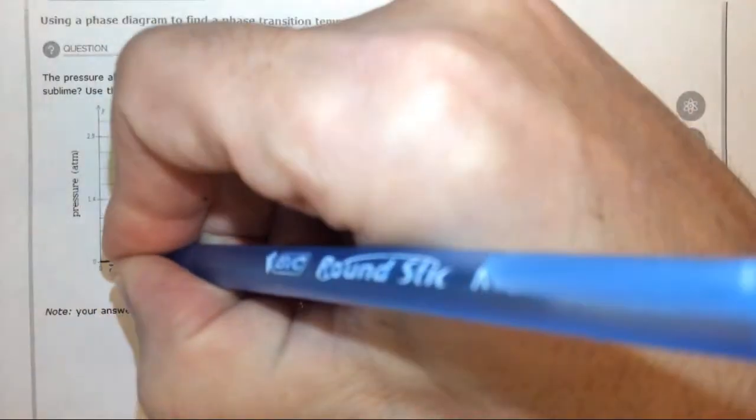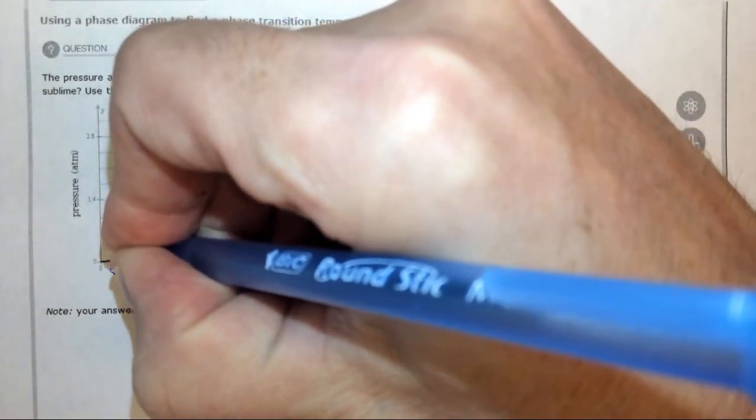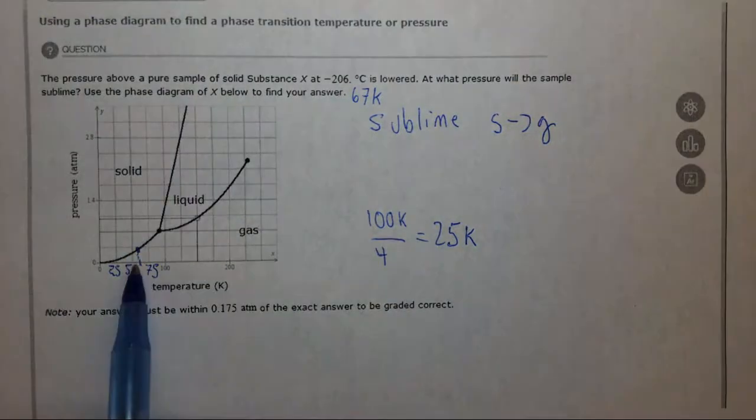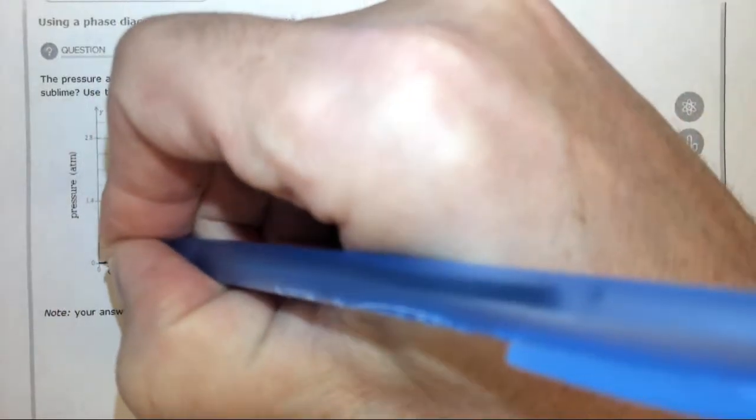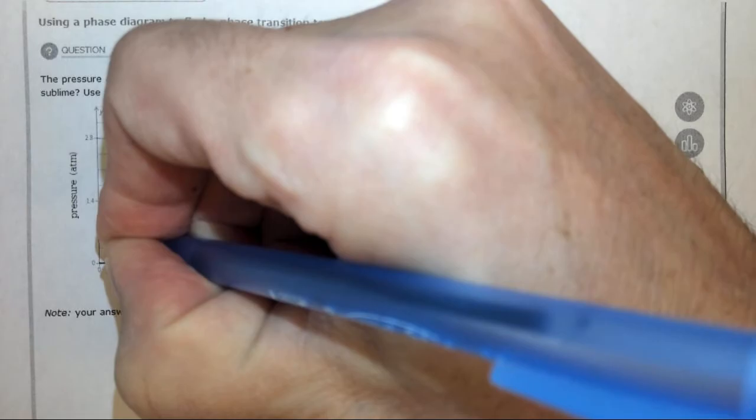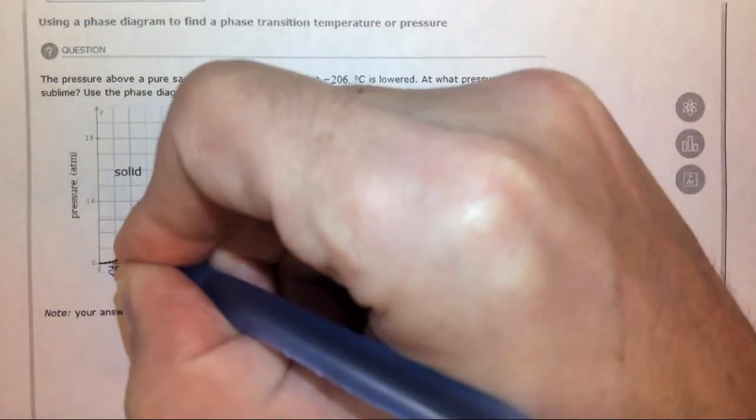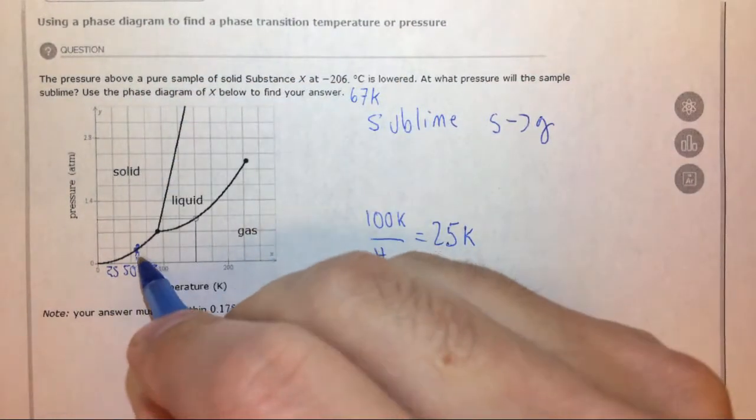We want to go up to our sublimation curve to find the pressure. I didn't quite do that properly, it should be more like over here. We want to find the pressure at which that occurs.